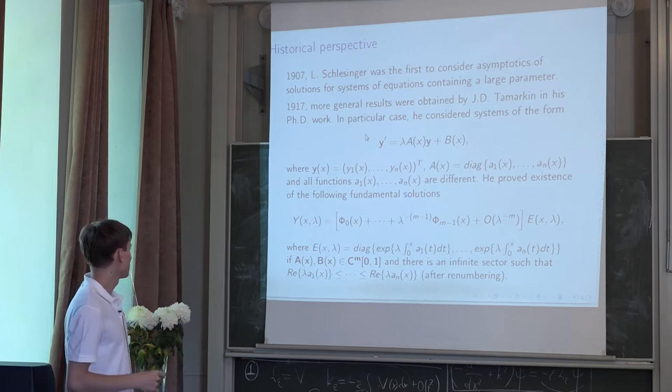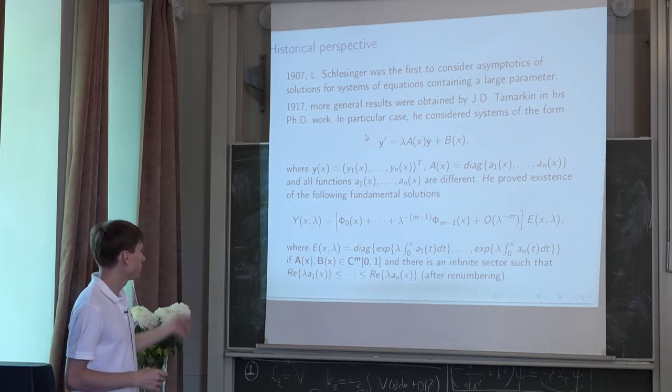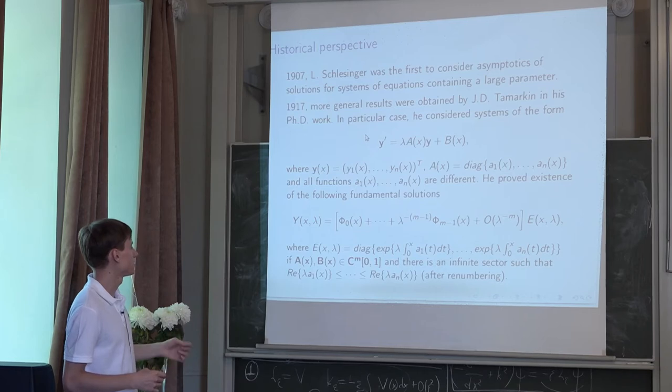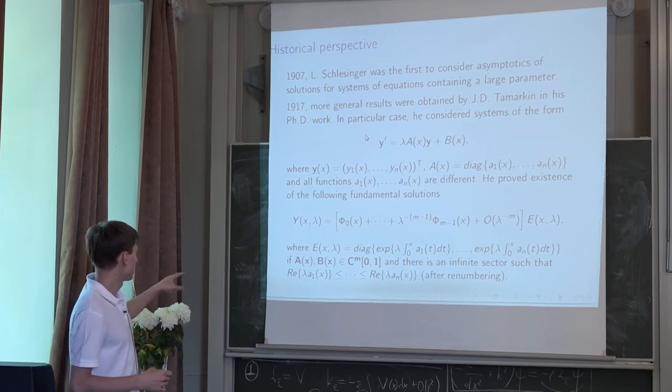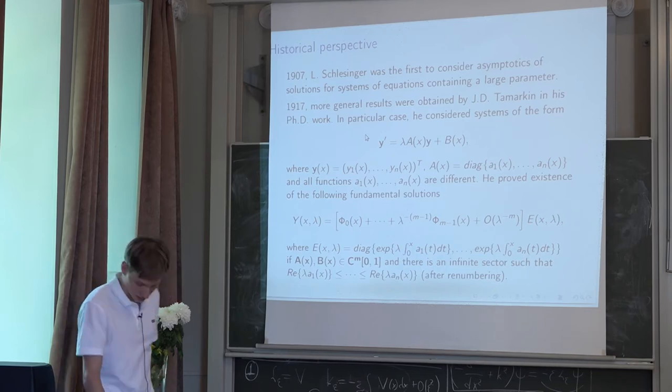And he assumed that A(x) and B(x) are m times differentiable functions. And also he assumed that there is an infinite sector such that the real parts of these numbers can be ordered in such way in this sector.